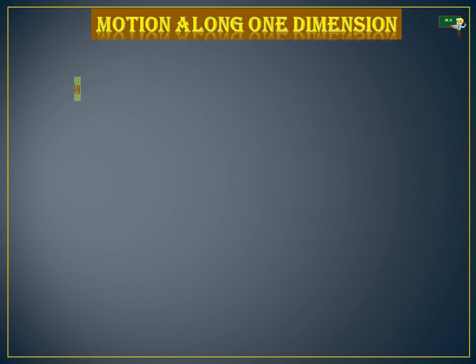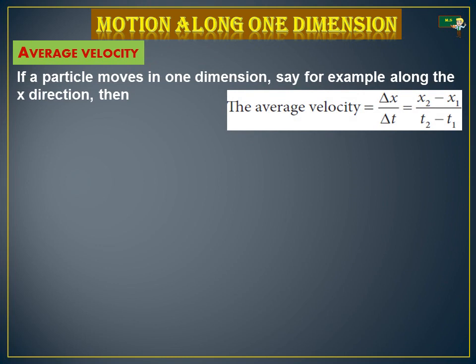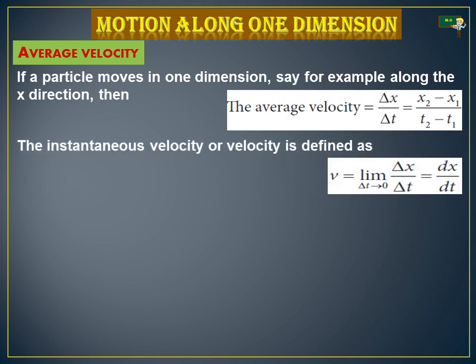Motion along one dimension. Let's see what is meant by average velocity. Average velocity is also a vector quantity, but in one dimension we have only two directions: positive and negative. Hence, we use positive and negative signs to denote direction. If a particle moves in one dimension, say along the x-direction, then the average velocity equals Δx/Δt, which equals (x₂ − x₁) divided by (t₂ − t₁). The instantaneous velocity is defined as v equals the limit as Δt→0 of Δx/Δt, or dx/dt.